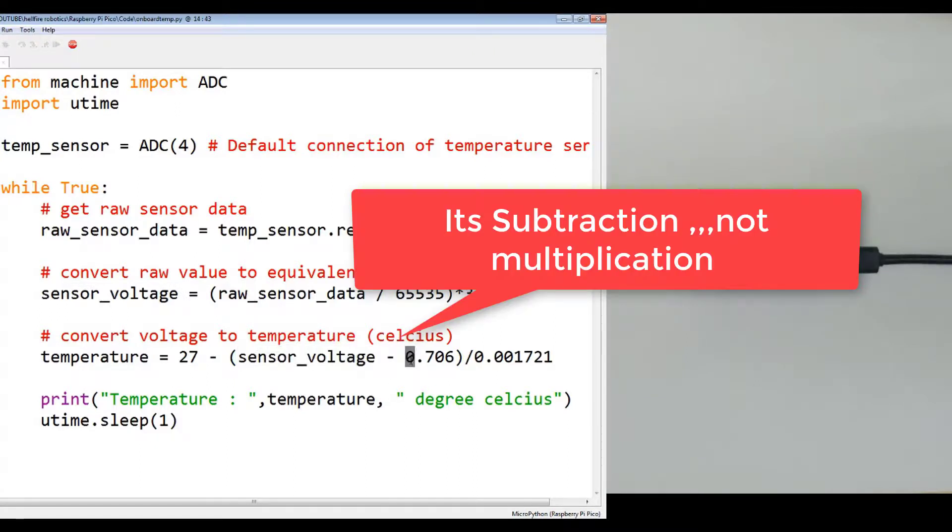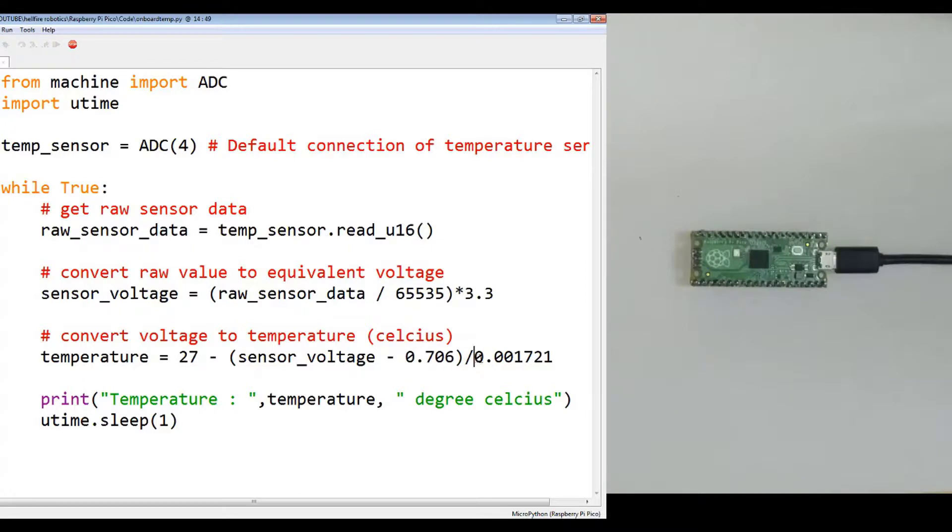Then you have to multiply by 0.706 and divide the entire equation by this value 0.001721. And then this entire thing has to be subtracted from 27 in order to get the temperature in degree Celsius. This entire mathematical equation is given by the Raspberry Pi board members.